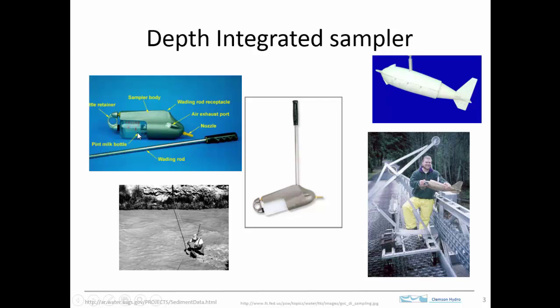To use the depth-integrated sampler, you lower it into the stream and raise it up gradually. If you raise it at a rate scaled to the flow rate, you can calculate the filling rate of the bottle and time your traverse so it accumulates water at a steady rate. When you finish the traverse — usually going up and down — the bottle is full, giving you one sample obtained over the full depth range of the stream. You then analyze that sample to get the sediment concentration at that position.